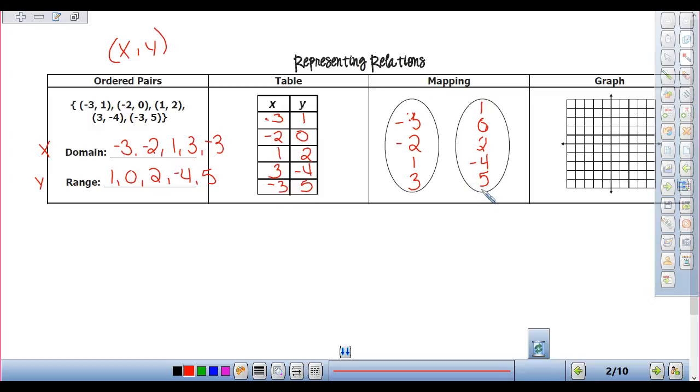Now I draw arrows of what goes to what. So negative 3 goes to the 1. What else does negative 3 go to? The 5. So negative 3 also goes to the 5. Negative 2 goes to zero. 1 goes to 2. And 3 goes to negative 4. And that is what a mapping looks like.